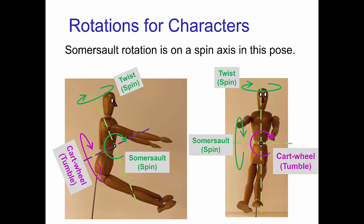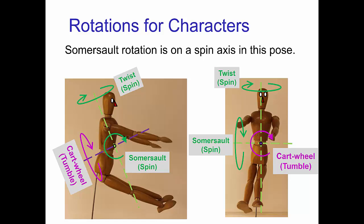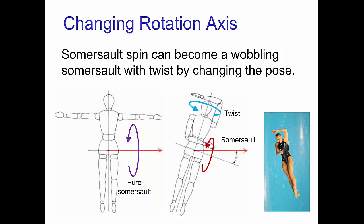Your best guide is to study reference to see what poses are used in acrobatic jumps. When a character changes pose in mid-air, the rotation can change in form. For example, these poses change the rotation from a pure somersault into a somersault with a twist.